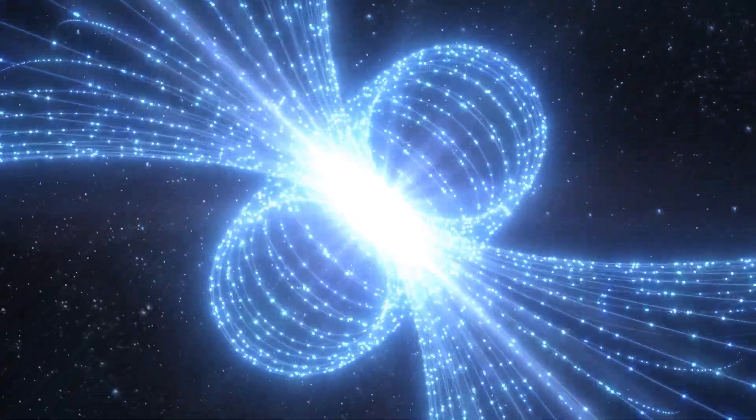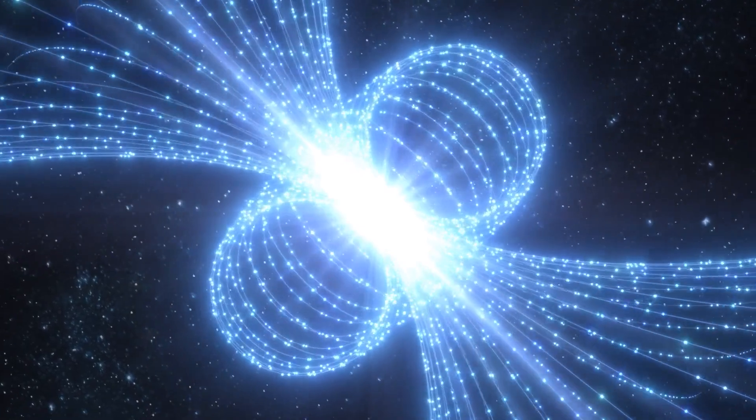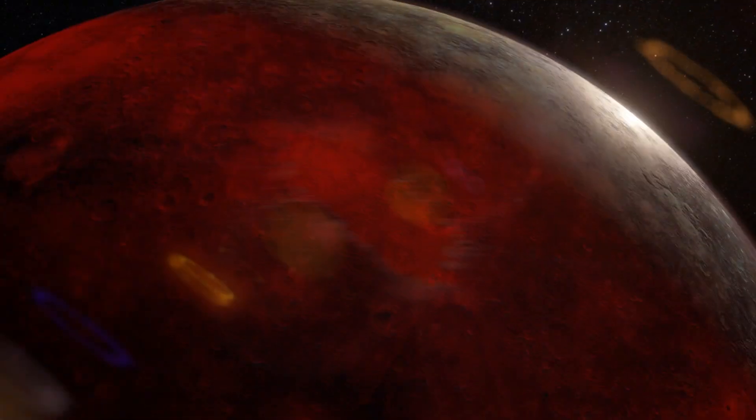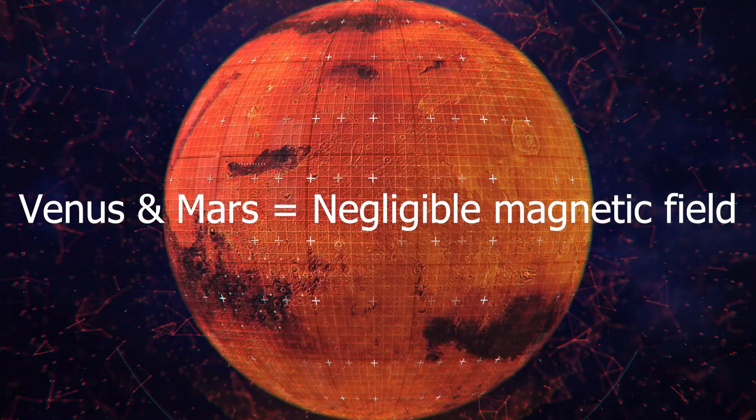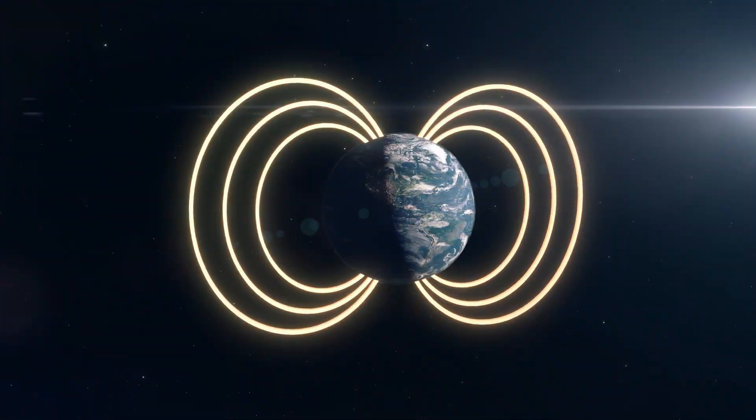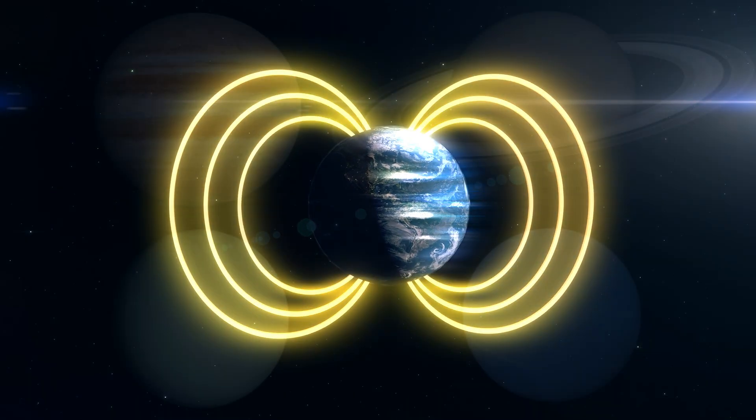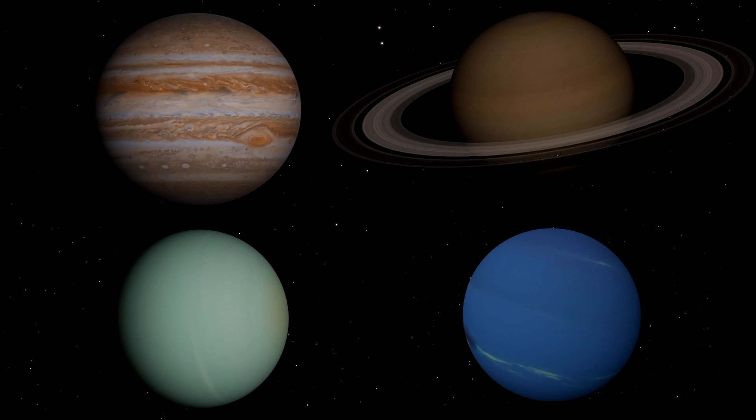If we look at our own solar system to see the commonality of planets that possess magnetic fields, we find that Mercury has an extremely weak magnetic field, Venus and Mars have almost no measurable magnetic fields, Earth has a moderately strong magnetic field, while the four gas giants—Jupiter, Saturn, Uranus, and Neptune—have extremely strong magnetic fields.